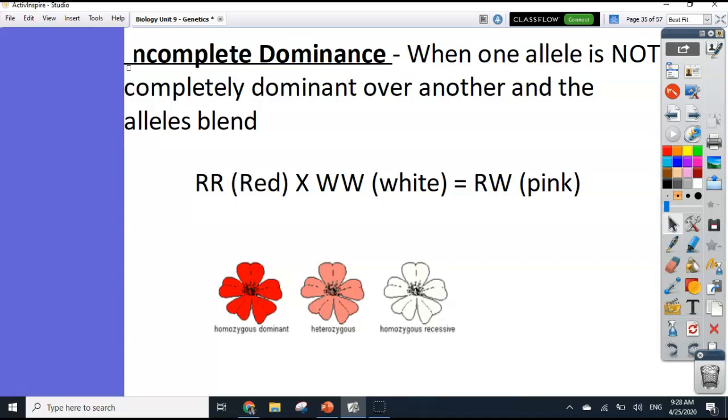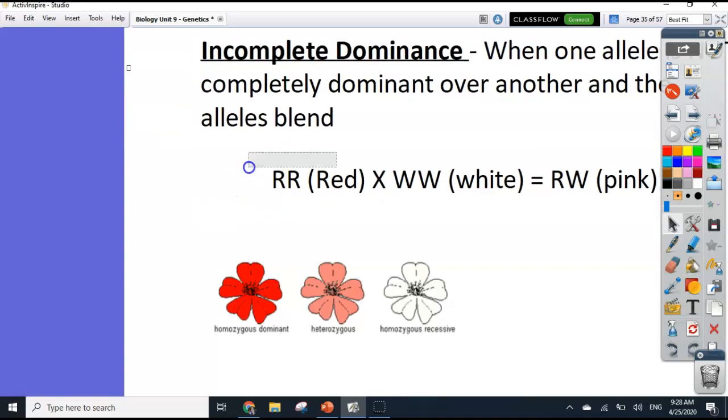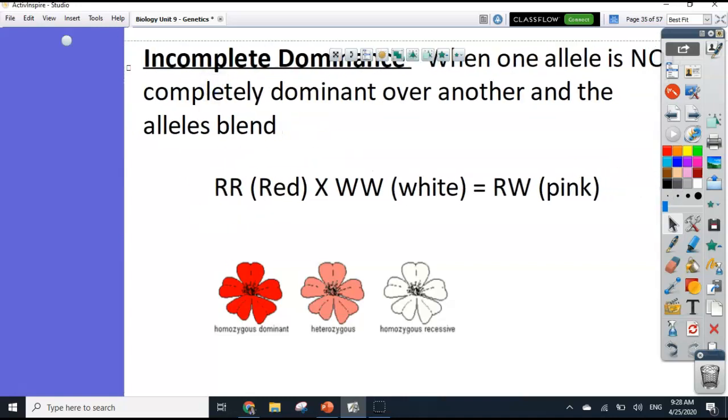The example they oftentimes use is with flowers. There's a specific type of flower called a snap dragon that we see this with. So with these flowers, if we get a red flower, we have a red flower here. We symbolize it with R, R. And we have a white flower. If we cross a red flower and a white flower, we don't get a red flower or a white flower. That's what we would normally expect. We end up getting a pink flower. So they mix together. They blend together.